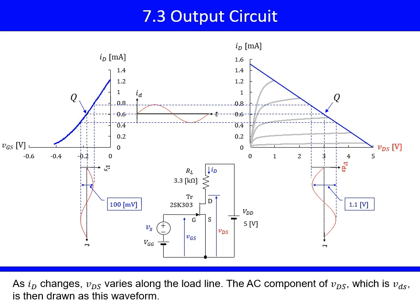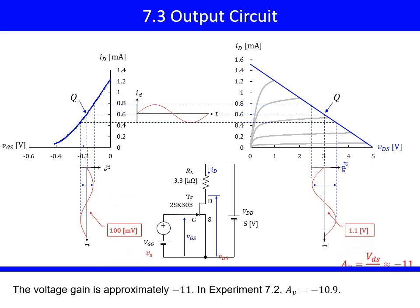As ID changes, VDS varies along the load line. The AC component of VDS, which is lowercase vds, is then drawn as this waveform. The voltage gain is approximately negative 11. In Experiment 7.2, the voltage gain was negative 10.9.